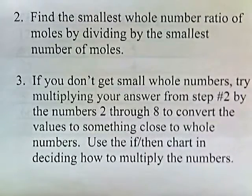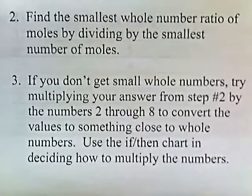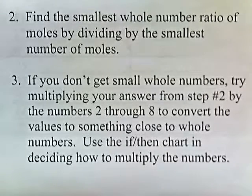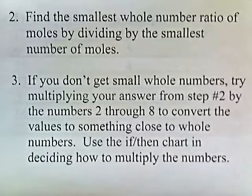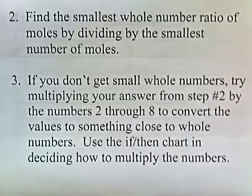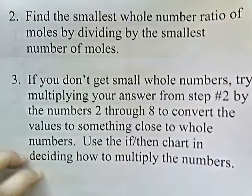You find the smallest whole number ratio of moles by dividing by the smallest number of moles. If you don't get small whole numbers, try multiplying your answer from step two by the numbers two through eight to convert the values to something close to whole numbers. You're going to use something called an if-then chart in deciding how to multiply the numbers. Now I'll explain what all these rules mean by giving some specific examples of problem solving.